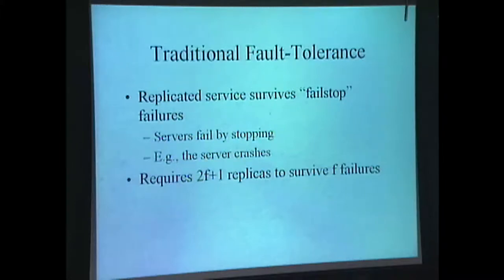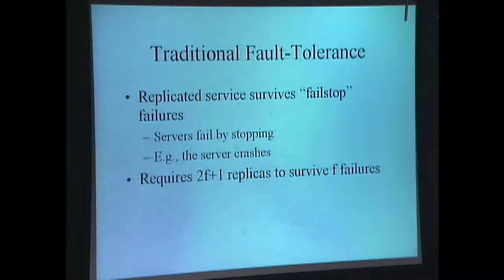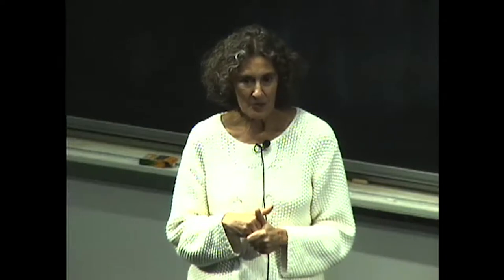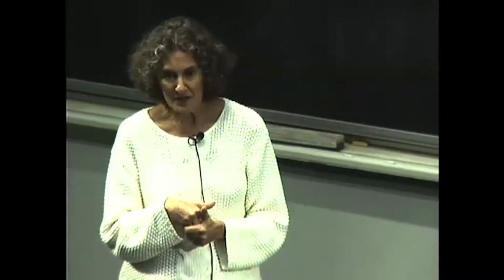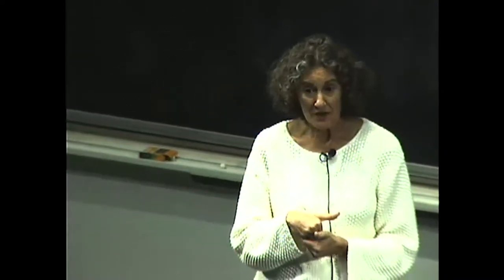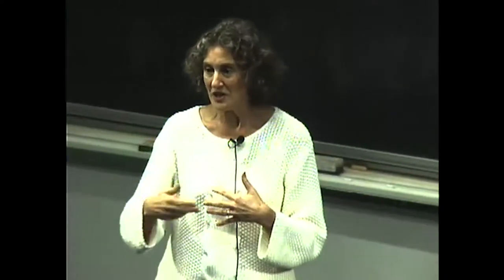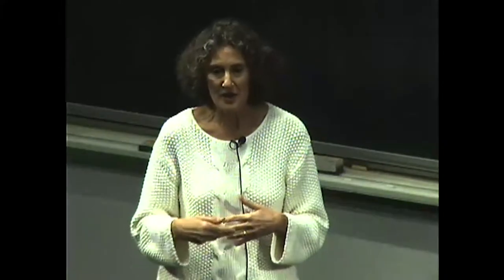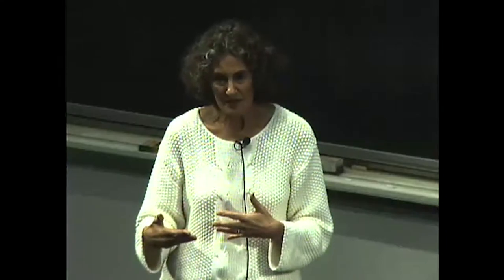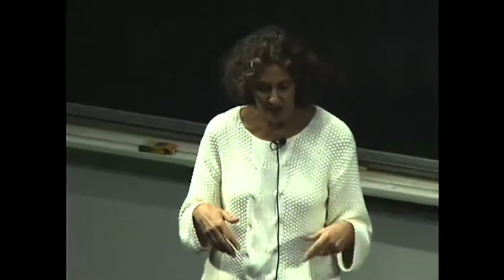Traditional fault tolerance, a topic of great research interest in the 80s, was concerned with replication algorithms designed to survive what are called fail-stop failures. Fail-stop failures are simple: when a failure happens, things simply stop — for example, something goes wrong with hardware and the computer stops functioning. These failures are relatively easy to cope with because you only have to worry about what to do if you can't hear from somebody, not about hearing from an entity that's not telling you the right stuff.